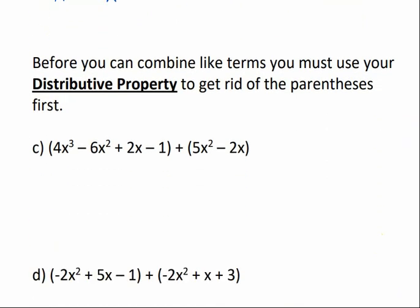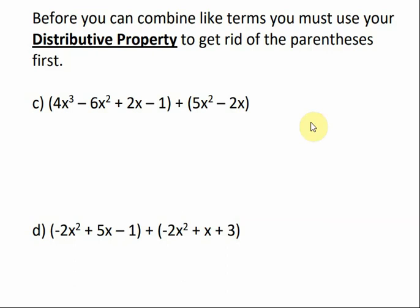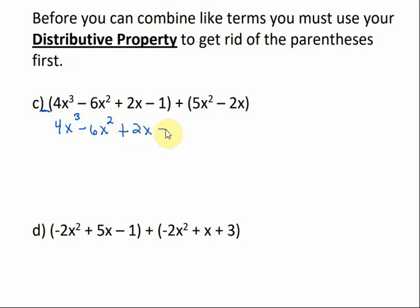Before combining like terms, we use the distributive property to remove any parentheses. In example c, if there's nothing in front of a set of parentheses, we just drop the parentheses and bring down what's inside. For the second set of parentheses with a plus sign in front: a positive times a positive stays positive, and a positive times a negative stays negative. So a plus sign in front just means we drop the parentheses — it doesn't change anything inside.